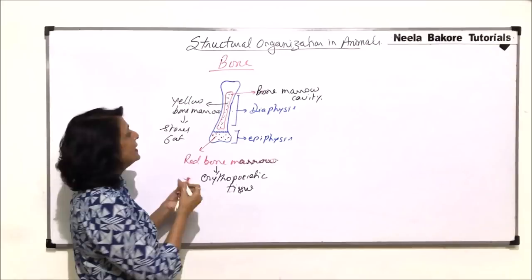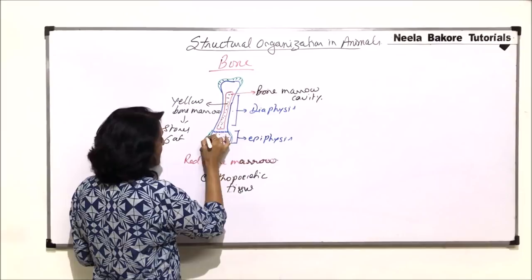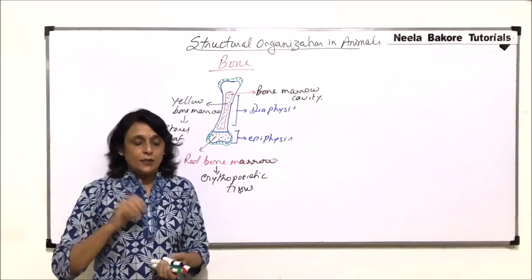This is the basic structure. The head part, that is the epiphysis part, is also covered with a cartilaginous cap. There is a padding of this cartilaginous tissue, which is normally at the head region.